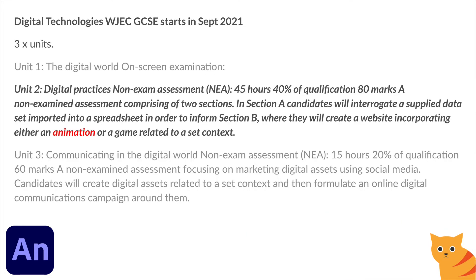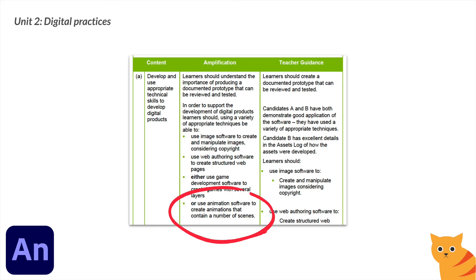We've got three units. The first digital technology unit is the on-screen examination. We're really focusing on unit two, which is about digital practices. It's about 45 hours, so there's quite a lot of time to get into this, but animation is complex. From the teacher guidance, once we've cleaned our data and understood our data set and started to find the trends and ideas within the data, we're going to be developing a website that will either have a game or an animation. We're focusing on the animation, and it says there that we need to use animation software and contain scenes.